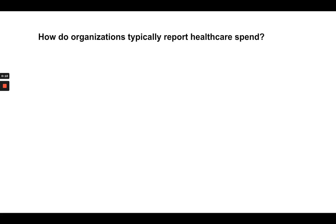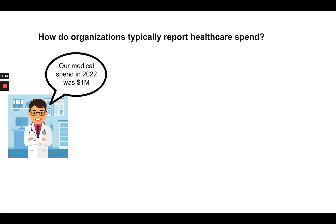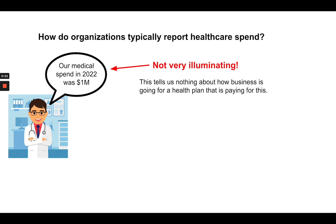The idea is: how do organizations typically report healthcare spend? They do not say something like 'Our medical spend in 2022 was a million dollars.' Why not? This is not very illuminating, because it tells us nothing about how business is going for a health plan that is paying for this.